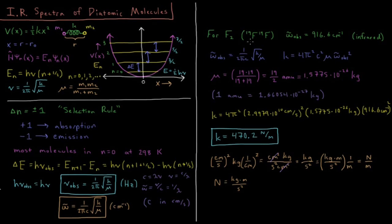I'm going to say that F2, both of these are fluorine 19, and we're going to say that the observed wave numbers of this transition is 916.6 wave numbers. And that falls squarely in the infrared region of the electromagnetic spectrum.